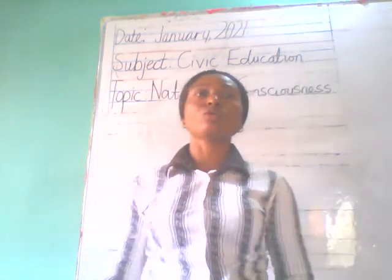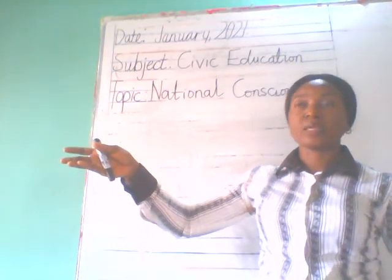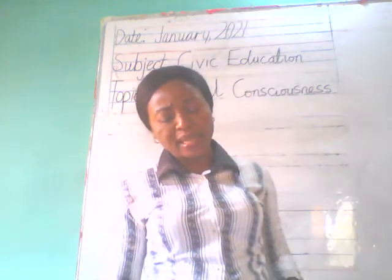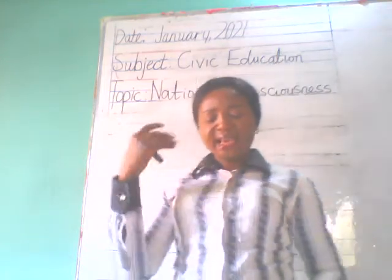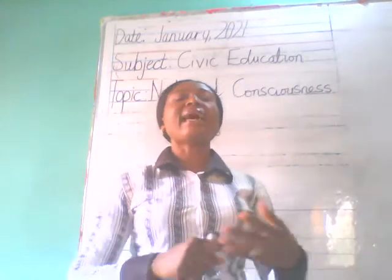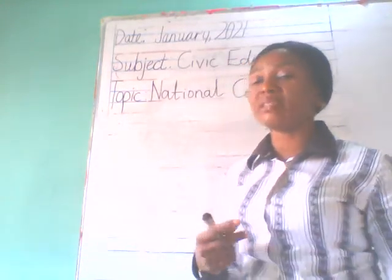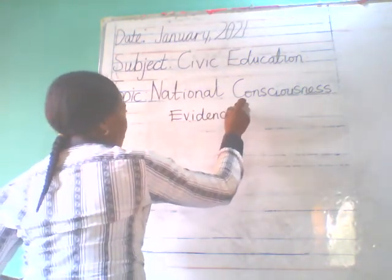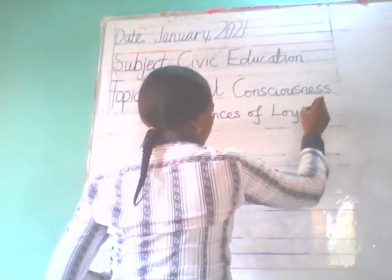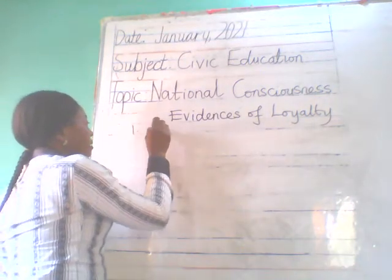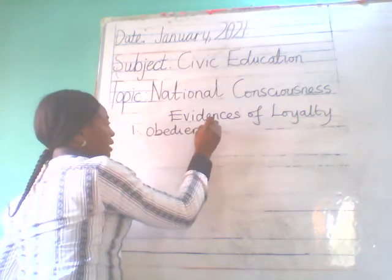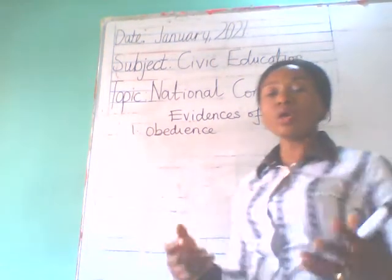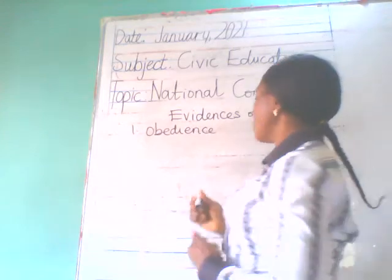For example, when you want to cross the road, you observe the traffic lines. A loyal person obeys and respects his or her parents, teachers, and elders. These are evidences of loyalty — things that show that you are loyal. Number one evidence is obedience. A loyal person has to be obedient. You cannot claim to be loyal when you are disobedient. Number two is defense.